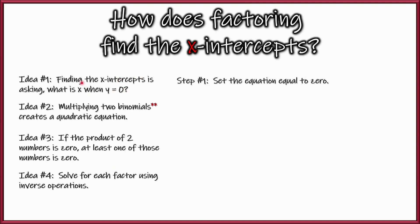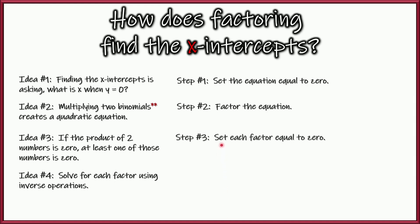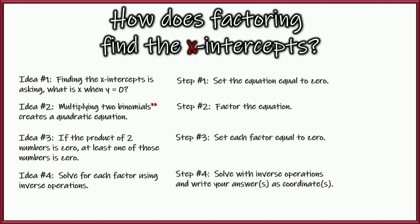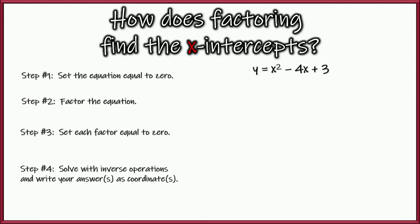From these ideas, here are our four steps. Step one: set the equation equal to zero. Step two: factor the equation. Step three: set each factor equal to zero. Step four: solve each one using inverse operations. Let's see an example and run through it step by step.